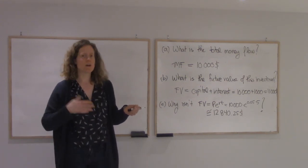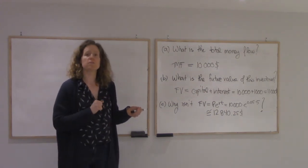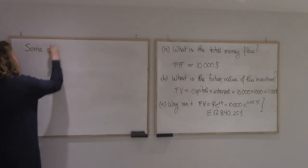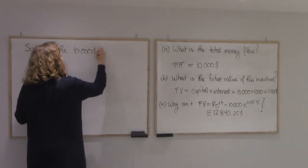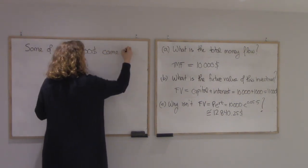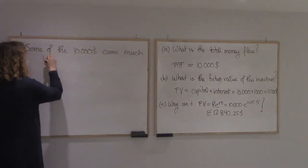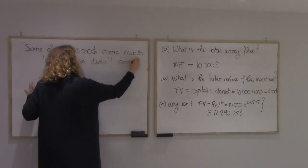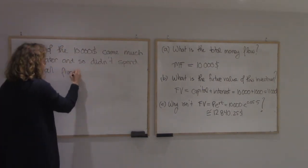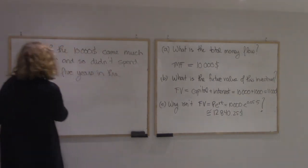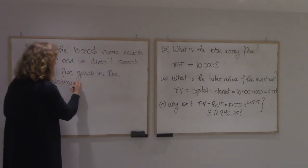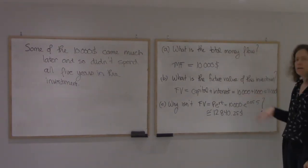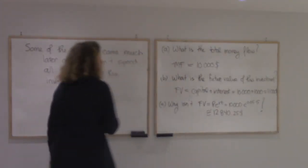So on some of this money, the money they got after four years let's say, they only have one year of interest to include instead of the five years. So some of the $10,000 came much later and so didn't spend all five years in the investment. So if the entire $10,000 showed up at time zero, that would be the amount you'd have in the account. But we're told that we only get $1,000, so that means the $10,000 didn't come all at once.